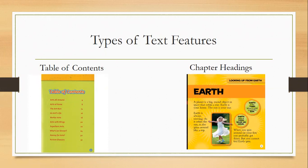Another text feature is chapter headings. If I'm not looking at the table of contents, I can flip through the book and look at big bold headings at the top of the page. For example, one says 'Earth' — this was from a book about planets, talking about planet Earth. You can flip through pages and look at these big bold headings to know what that part of the book is going to be about.